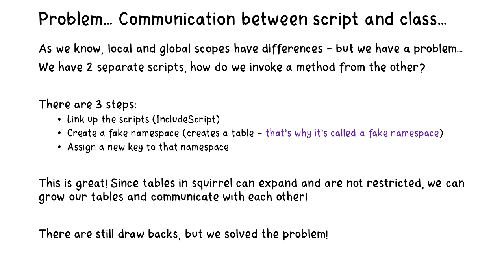We somehow need to link the two FreeScripts up, and we can do this in three different steps. We can link up the scripts using the include script within your FreeScript. We can create a fake namespace — we basically create a table, that's why it's called a fake namespace — and we assign a new key to that namespace. This means we can access and use methods from other scripts without rewriting them, which is really handy and gives really good modularity.